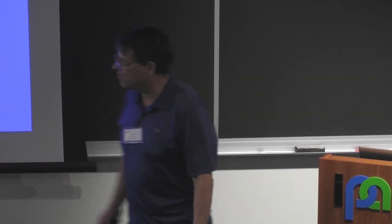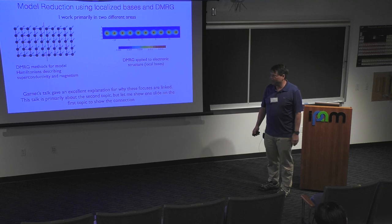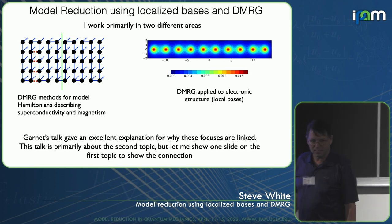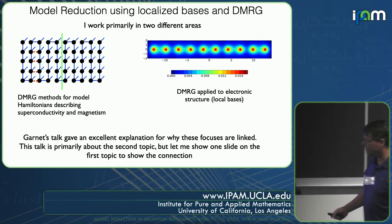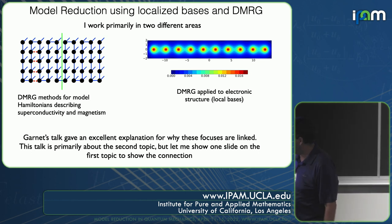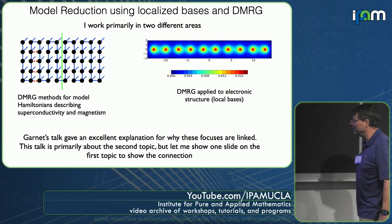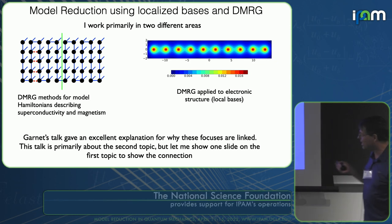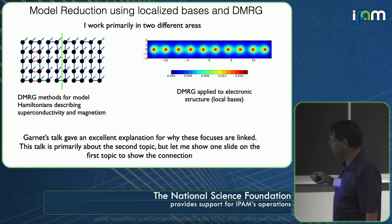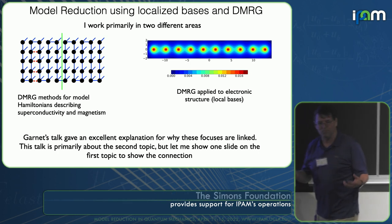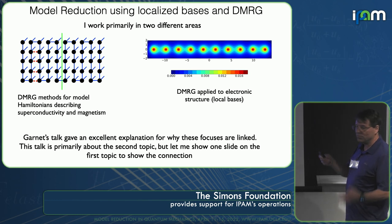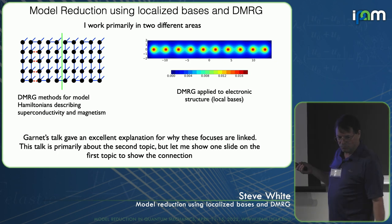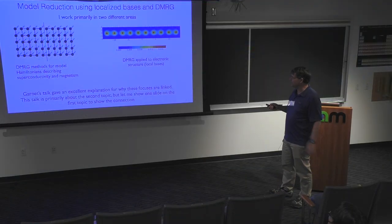I work primarily in two different areas. The first area is condensed matter, strongly correlated systems, things like the high temperature superconductors, spin liquids, and magnetism. I use DMRG for this, both for development and applications. The other area is trying to improve the application of DMRG to electronic structure — looking at fundamental problems of what's limiting DMRG, which also applies to tensor networks and other algorithms, and how you can set up the Hamiltonian to make the simulation better.